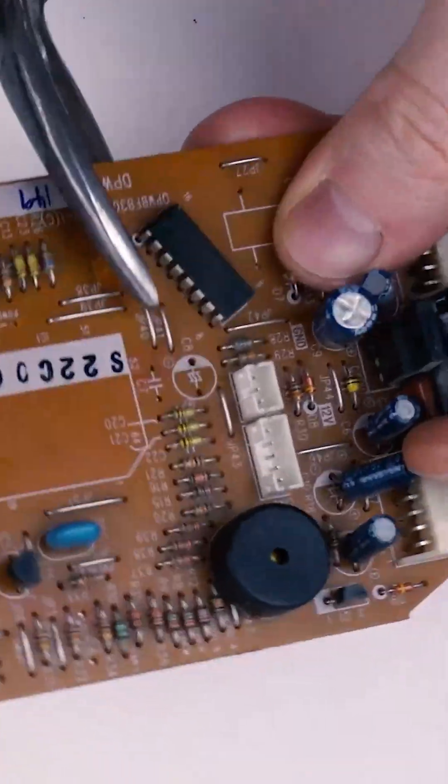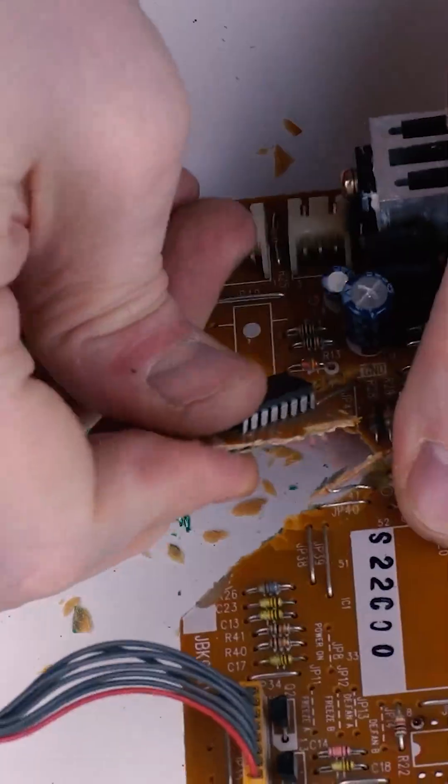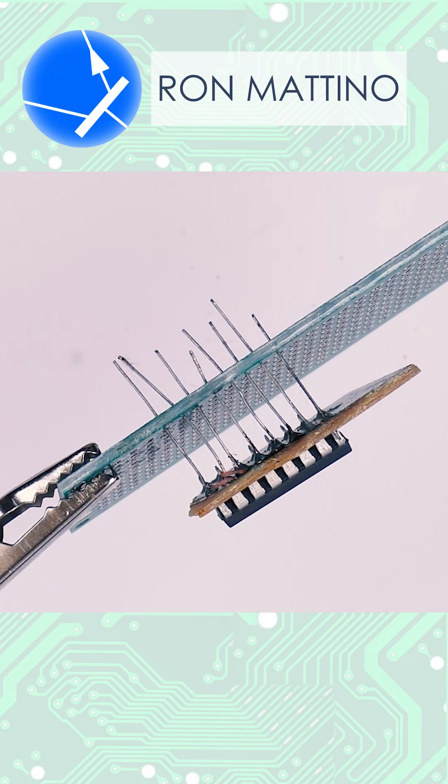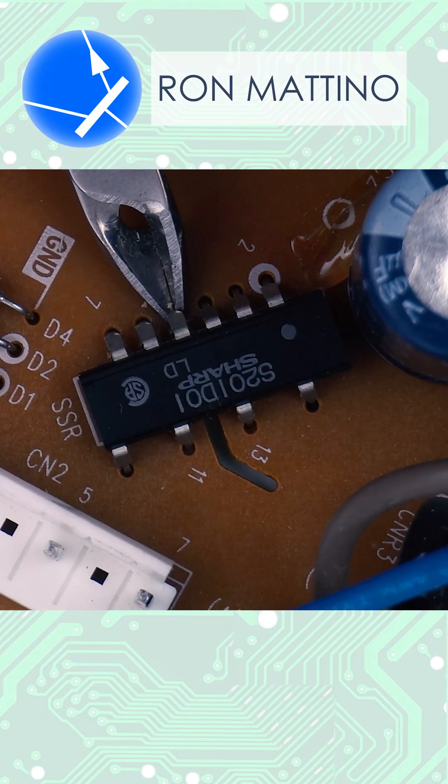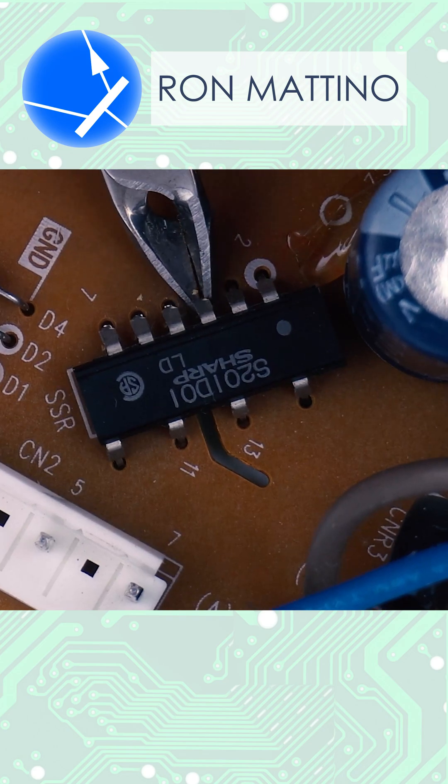Sometimes it's easier to cut out the IC instead of desoldering it, then just solder wires to its pins and use as intended. Apply wire cutters gently to make sure you don't break the pins at the base.